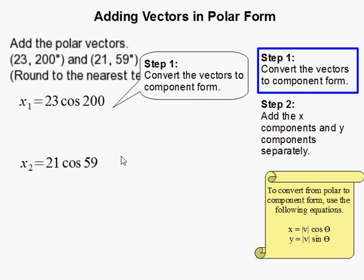So here we go. I'm rewriting x1 and x2 here. I got the 23 here for the magnitude and the cosine 200 from here, and so on. So the x is 21 cosine 59.